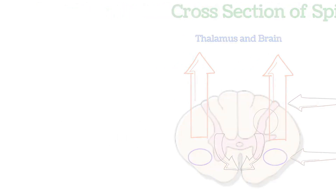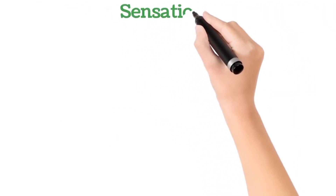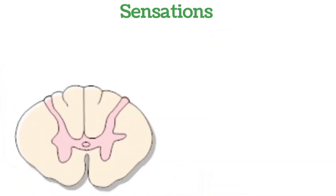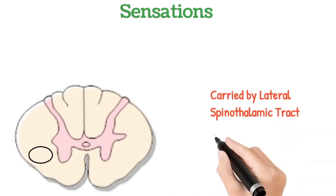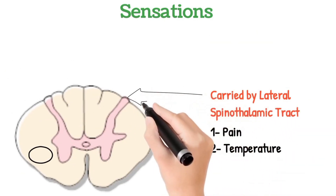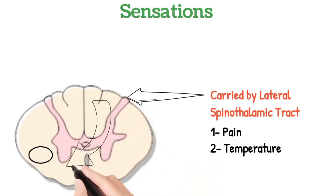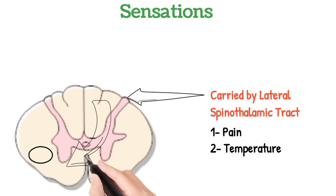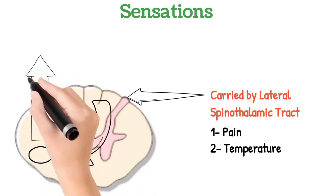Now we will discuss the sensations carried by the lateral spinothalamic tract. The sensations carried are: number one, pain; and number two, temperature. These sensations are carried by the dorsal root to the spinal cord. These fibers immediately decussate after entering the spinal cord, then ascend upward as the lateral spinothalamic tract to carry sensations to the brain.